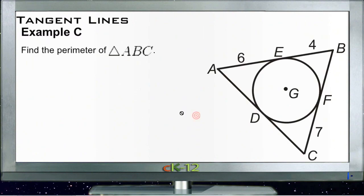All right, let's take a look at example C. Example C says find the perimeter of triangle ABC. And here's an interesting one.